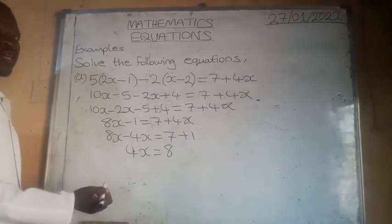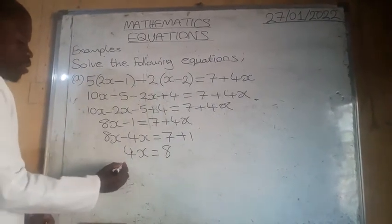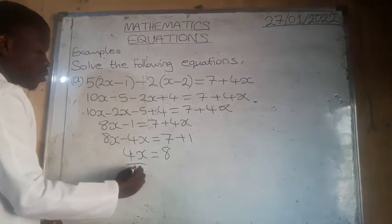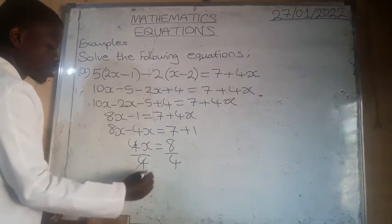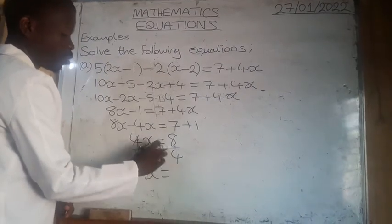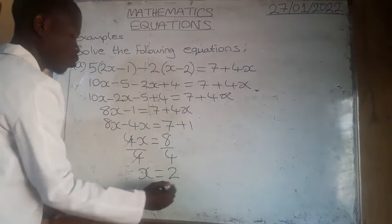We are solving for x. So at this stage, we have to divide both sides by 4. So x equals 8 divided by 4, which is equal to 2.